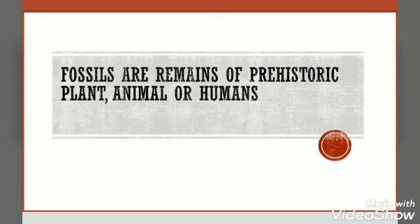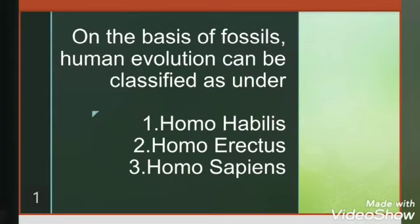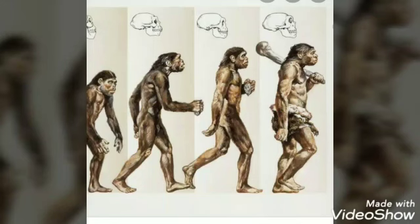Let us proceed to the next paragraph. The story of human evolution is not only long but also very complicated due to new findings and researches, which lead to revision and modification. On the basis of fossils, human evolution can be classified as: Number 1 — Homo habilis, the tool makers; Number 2 — Homo erectus, the upright man; and Number 3 — Homo sapiens, the wise or thinking man, to which all present-day human beings belong. Now, I will show you some pictures of the evolution of mankind — here they look like apes, and then they started walking erect.